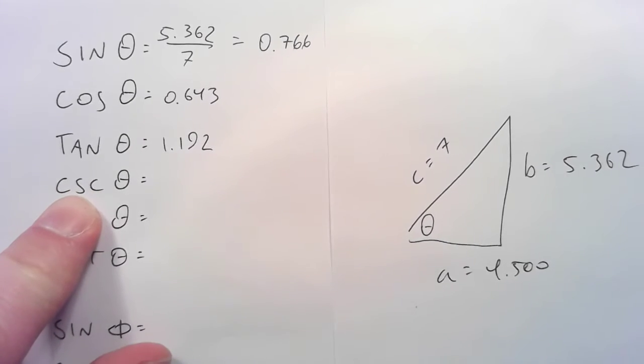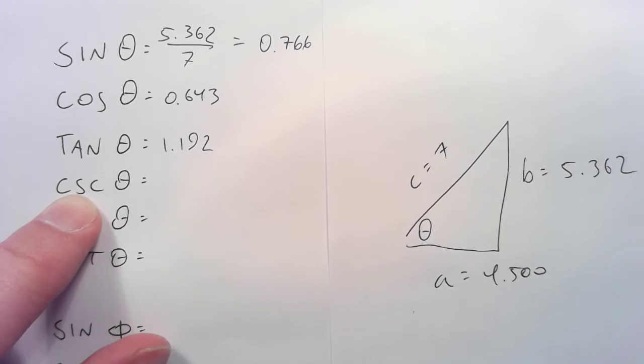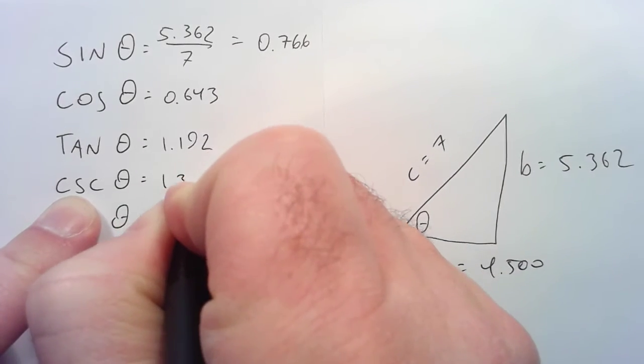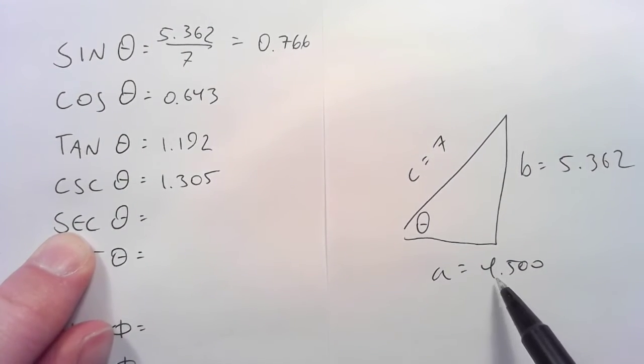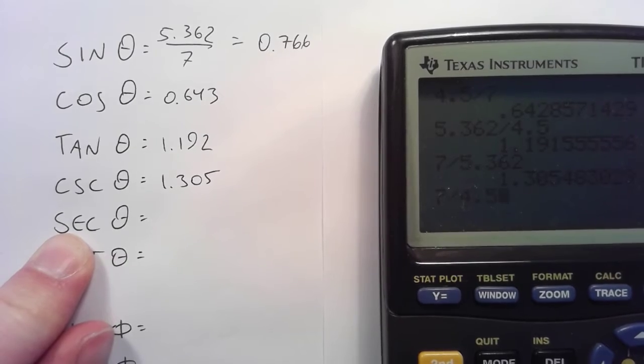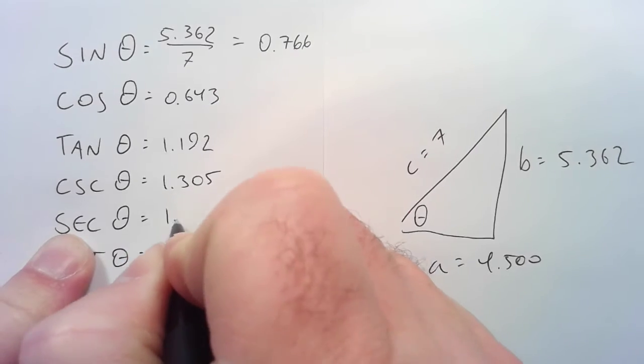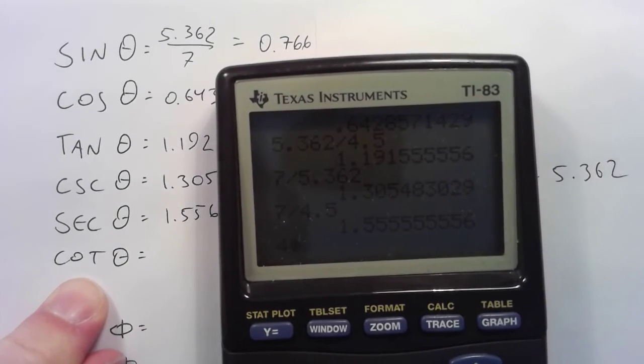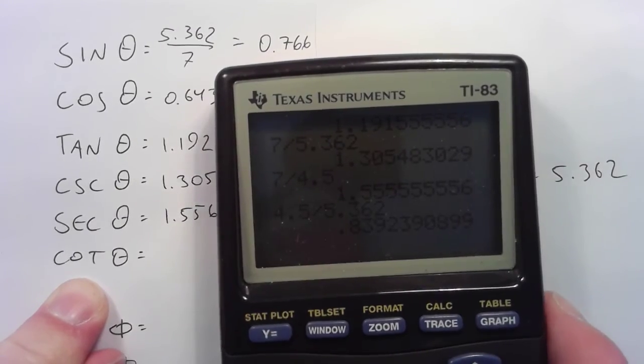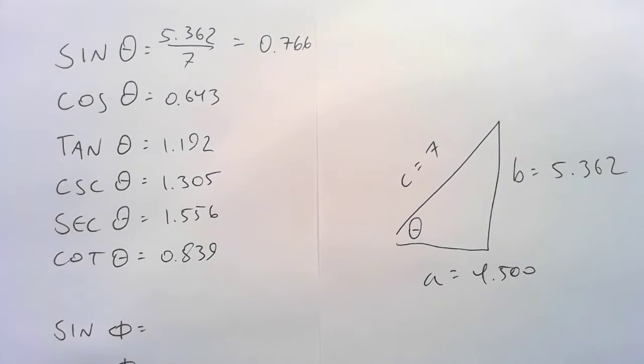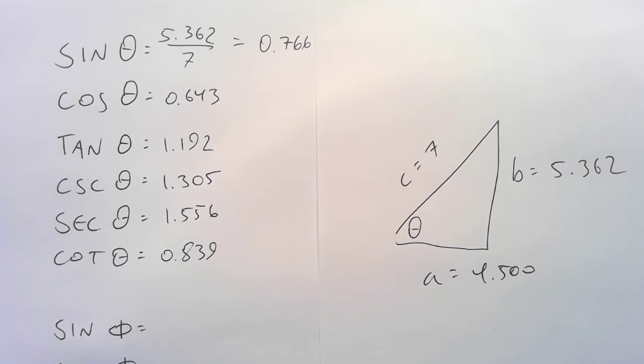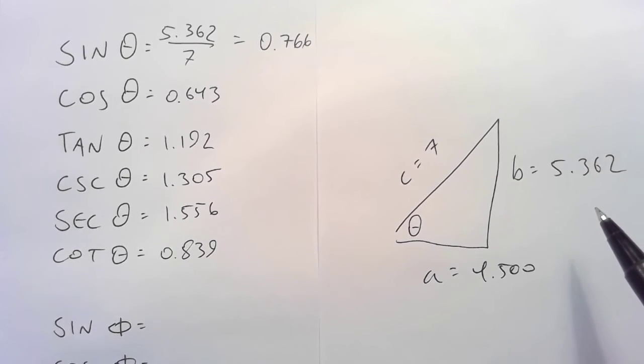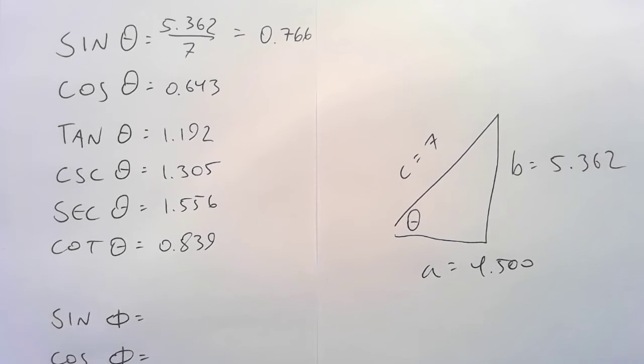The cosecant, that would be the hypotenuse over the opposite. 7 over 5.362, 1.305. Secant would be 7 over 4.5, 1.556. And, cotangent would be 4.5 over 5.362, 0.839. The only time I ever used a trig button on my calculator was to get that sine. After that, it was all square roots, addition, subtraction, and division. Only needed a trig button once. You could use your trig button a whole bunch of times, or you could use it once, or somewhere in the middle.